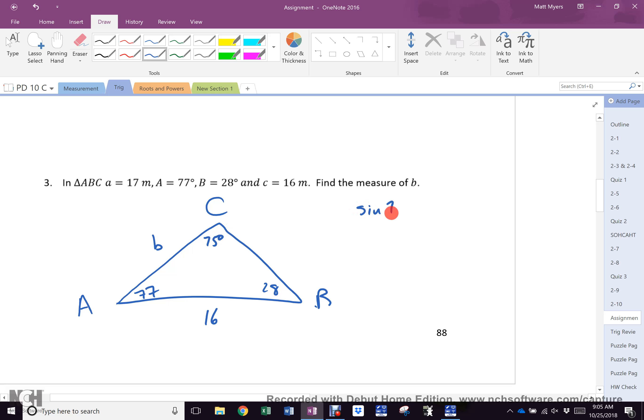So, sine 75 over 16 equals sine 28 over b. 16 sine 28 over sine 75 equals b, which is 7.8.